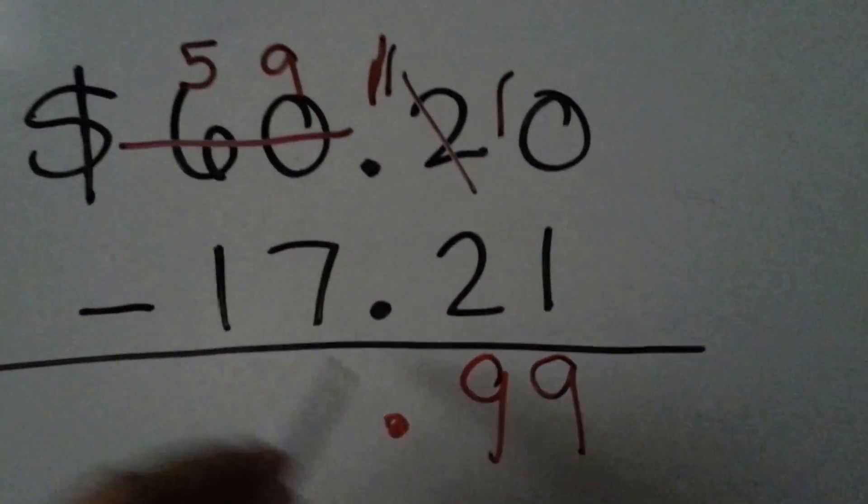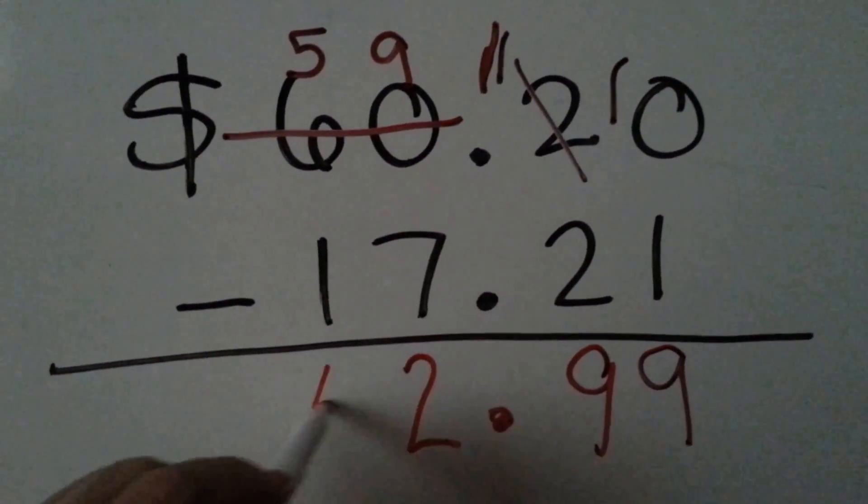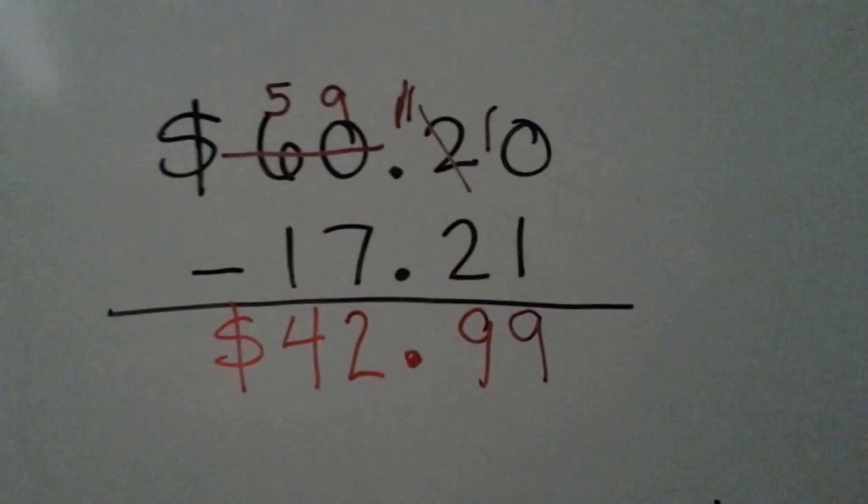Remember to put your decimal point. Nine take away seven is two. Five take away one is four. Remember your dollar sign. And we have forty-two dollars and ninety-nine cents left over.